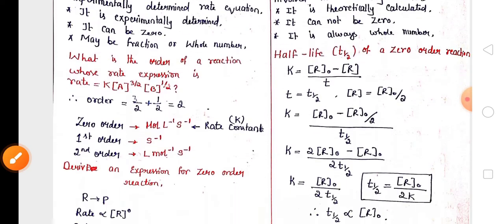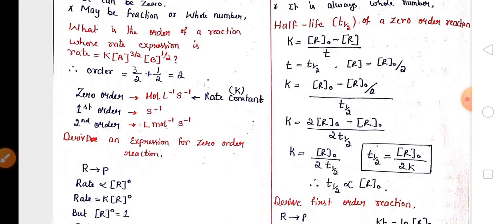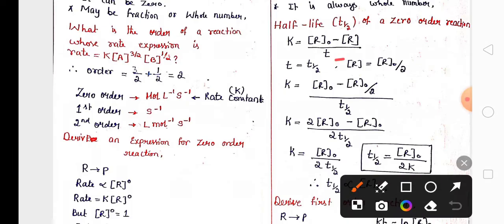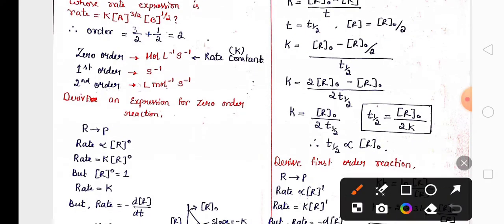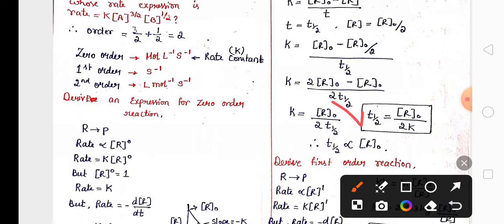In the exam they may also ask you to derive the half-life of zero order. Substitute t as t½ and R as R₀/2. When you calculate, you get t½ for zero order = R₀ / 2k, which indicates that half-life in zero order is directly proportional to the initial concentration of the reactant.